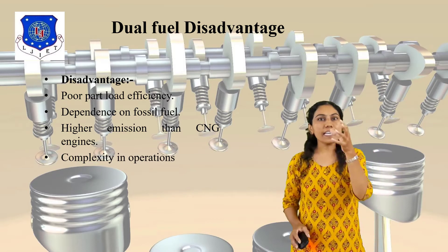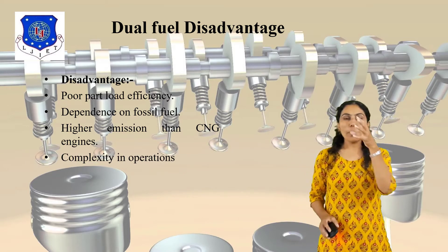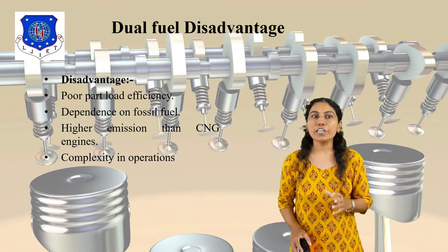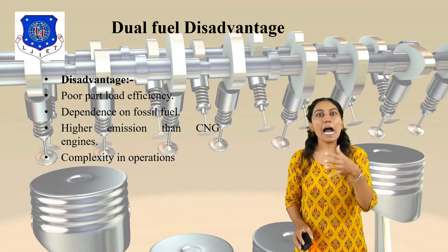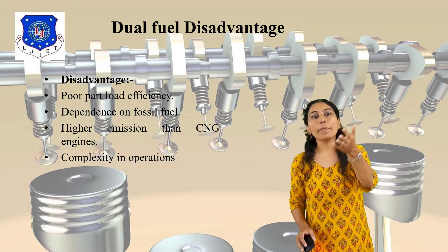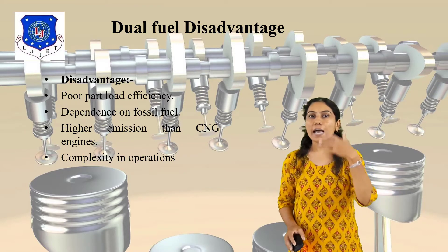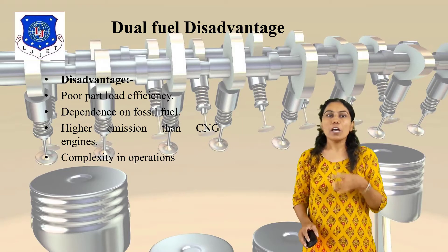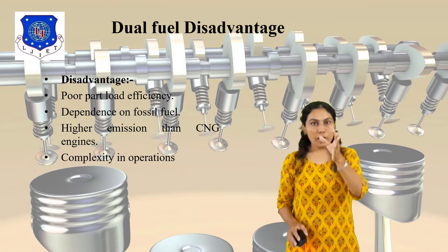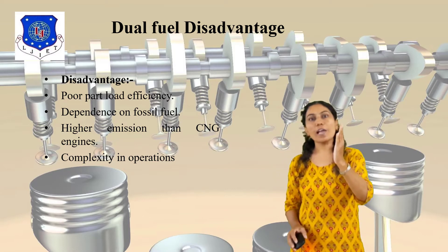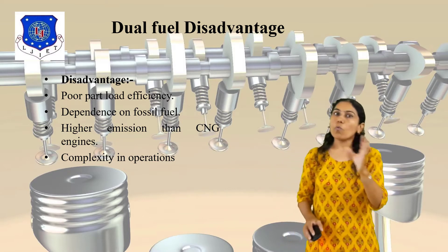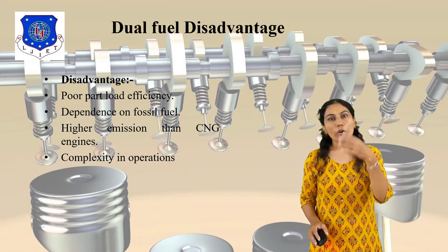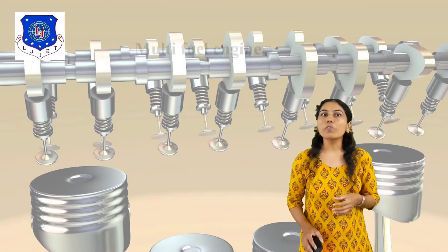The fourth disadvantage is complexity in operation. So the disadvantages are: poor part-load efficiency, dependence on fossil fuel, higher emissions compared to CNG, and complexity in operation. This completes our discussion of the dual fuel engine — how it works, its process diagram, and its advantages and disadvantages.